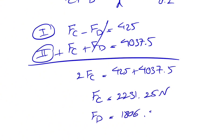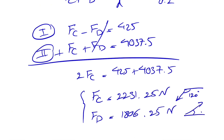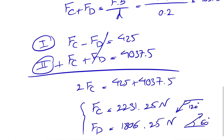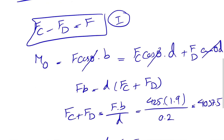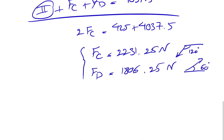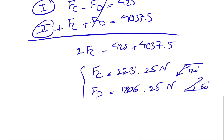And Fd = 1806.25 Newtons. For the angles: Fc makes 120 degrees with the horizontal, and Fd makes 60 degrees with the horizontal — that is, 90 plus 30 = 120 degrees for Fc and 90 minus 30 = 60 degrees for Fd.